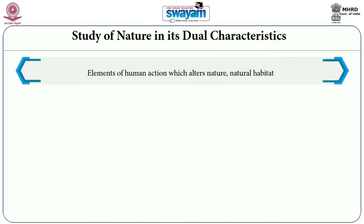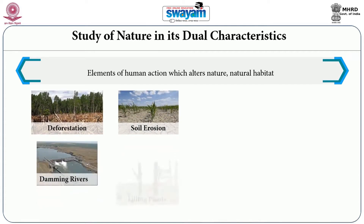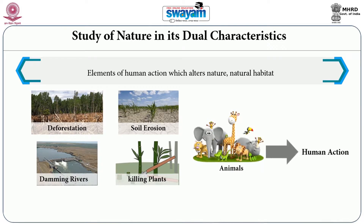The second dimension of environmental history's study of nature is nature as altered by human action. Environmental history tries to study human society as it alters the natural landscape. Natural processes like deforestation, soil erosion, damming of rivers, and killing of plants and animals are outcomes of human action — human-action-induced natural changes. Human action is considered here as a maker and un-maker of nature.